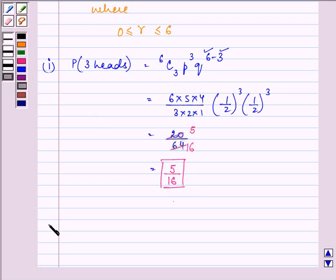Proceeding with the second part, here we need to find out the probability of getting no head. That means here our r is equal to zero. So it will be six choose zero, p raised to the power zero, q raised to the power six.